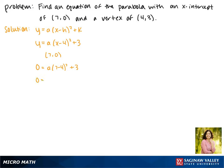So here 7 minus 4 is 3, 3 squared is 9, so we have 9a plus 3.